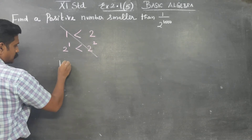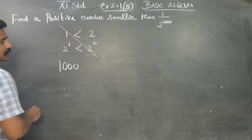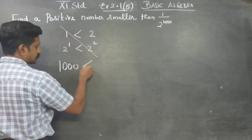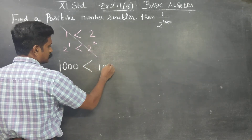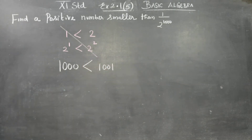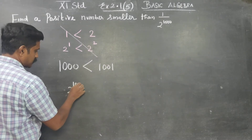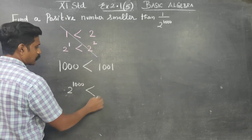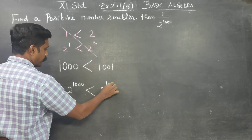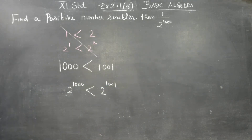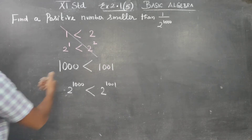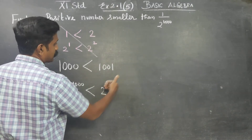1,000 is less than 1,001. Am I right? 1,000 is less than 1,001, so 2 power 1,000 is automatically less than 2 power 1,001.